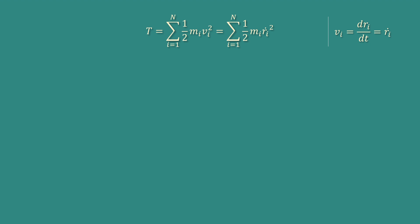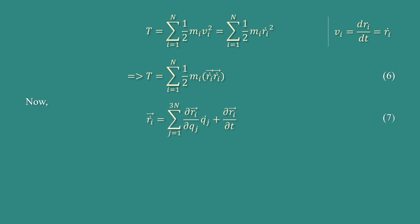Again, Vᵢ = dRᵢ/dt = ṙᵢ, so T = Σᵢ₌₁ᴺ ½Mᵢṙᵢ², which implies T = Σᵢ₌₁ᴺ ½Mᵢ(ṙᵢ · ṙᵢ). This is equation number 6. Now, ṙᵢ = Σⱼ₌₁³ᴺ (∂rᵢ/∂qⱼ)q̇ⱼ + ∂rᵢ/∂t, since the system is free from constraints. This is equation number 7.